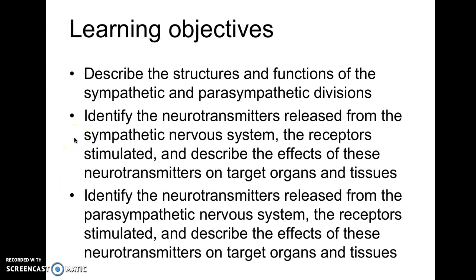We want to describe the structures and the functions in the sympathetic and parasympathetic divisions. In the previous video, we talked about the structure of the autonomic nervous system and compared the anatomy of the sympathetic and parasympathetic divisions. You should remember that the cell bodies in the sympathetic division are located in the thoracolumbar region of the spinal cord, and in the parasympathetic division, in the brainstem and the sacral region of the spinal cord.